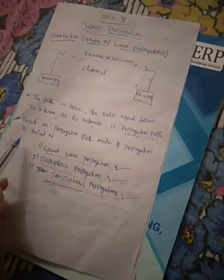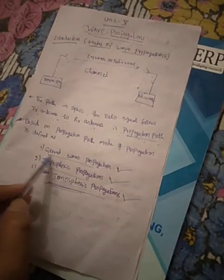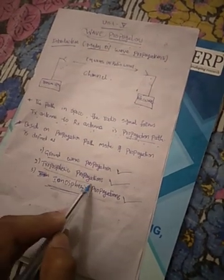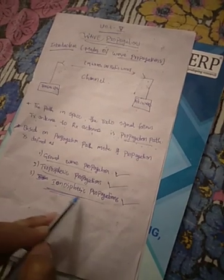We have different types of modes of propagation. One is ground wave propagation, one is tropospheric propagation, and another is ionospheric wave propagation — ground wave propagation, tropospheric propagation, and ionospheric propagation.